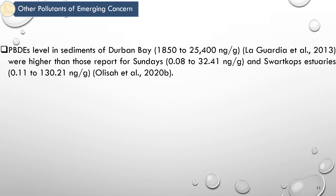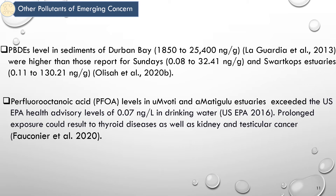Other pollutants of emerging concern include PBDEs, which are polybrominated diphenyl ethers. PBDEs are likely to enter the South African environment during the manufacturing or use of brominated flame retardant products. It was reported that PBDE levels in sediment of Durban Bay were higher than those reported for Sundays and Swartkops estuaries. Other emerging pollutants include perfluorooctanoic acid and perfluoroalkyl substances (PFAS), found in food packaging materials and industrial electronic devices. Although they have received less attention from scholars in South Africa, probably because of their high cost of analysis, PFOA levels in some estuaries exceeded the US EPA health advisory level of 0.07 ng per litre in drinking water.